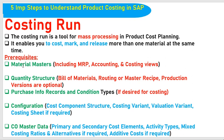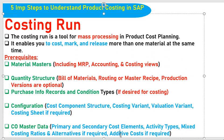These are the prerequisites we need to know before understanding the Costing Run. Material Master, including MRP, Accounting, and Costing Views — these are three important views in the Material Master concept. For Quantity Structure, we need Bill of Material, Routing, Master Recipe, and Production Versions (optional), as well as Purchasing Info Records and Condition Types. For configuration, we should know Cost Component Structure, Costing Variant, Valuation Variant, and Costing Sheet. CO Master data like Primary Cost, Secondary Cost, Activity Types, Mixed Costing Ratios, and Alternatives are also required.